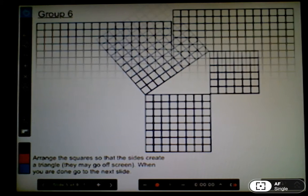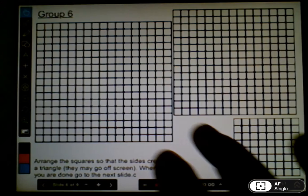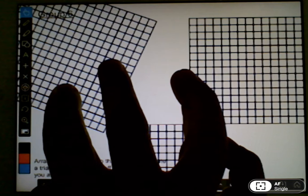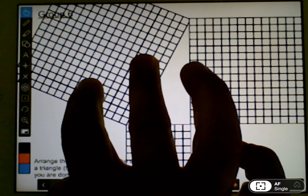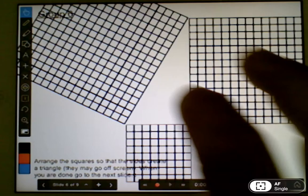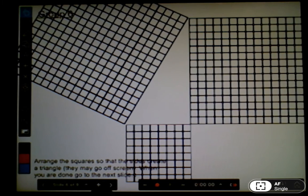This is the last set, and this is definitely going to go off screen when you do this one. When they're done, there's in total six sets of triangles that are created.